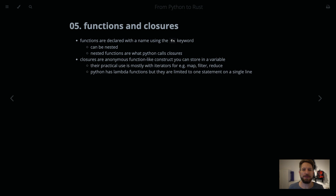Hello, welcome to Bedroom Builds at the From Python to Rust series, episode 5: Functions and Closures. Functions exist in both languages — in Python we use the `def` keyword to define them, and in Rust we have the `fn` keyword.